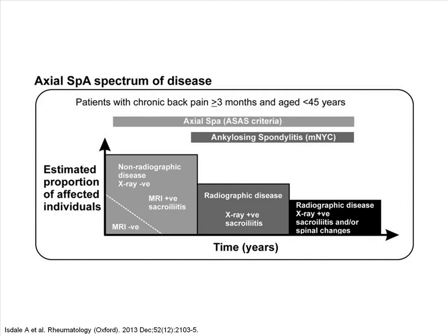In the past, ankylosing spondylitis referred to a group of patients who had radiographic disease, defined by the presence of sacroiliitis on the pelvic x-ray. With modern technology, patients can have absence of sacroiliitis on the pelvic x-ray but positive sacroiliitis on MRI. These patients are now classified as having axial spondyloarthritis, and can be defined as such earlier on in the clinical course of the disease.